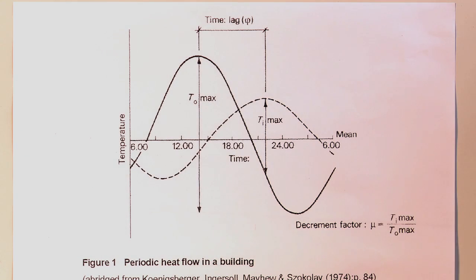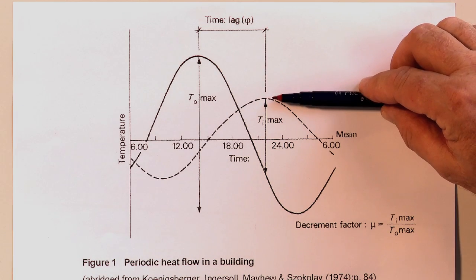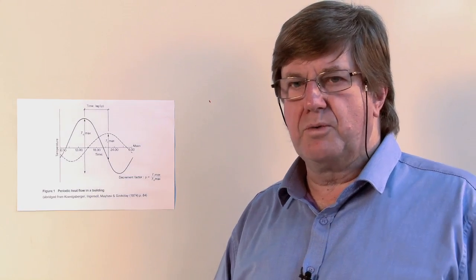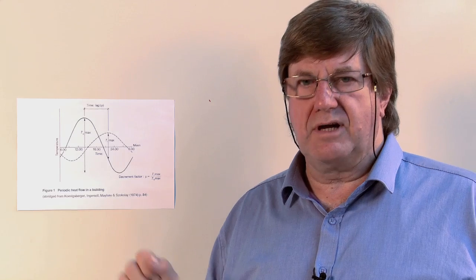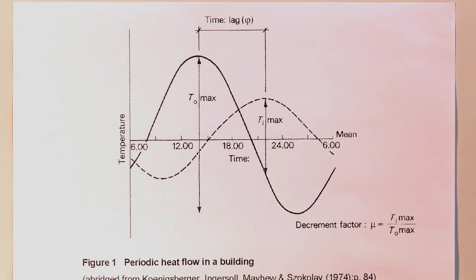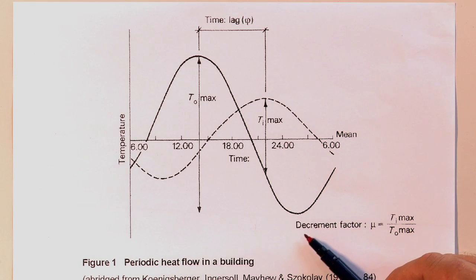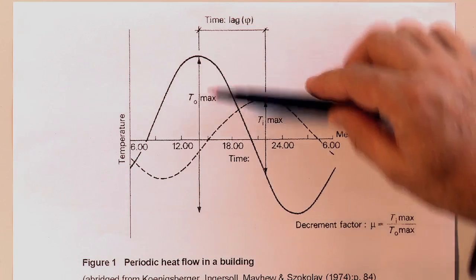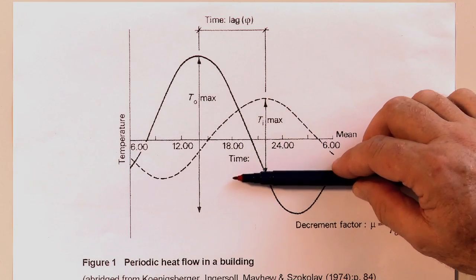We also need to note that there is a temperature drop — from here to here. We can expect that, because we have a lot of energy lost travelling through the brick wall, a lot of energy lost through the 40mm air gap, and further temperature lost through the gyprock wall. The term we use to represent this is the decrement factor.